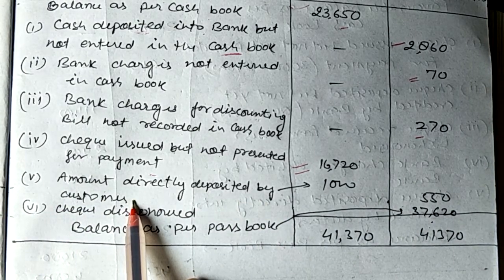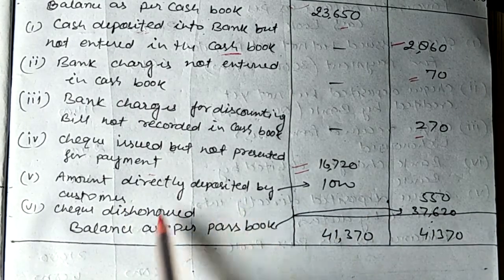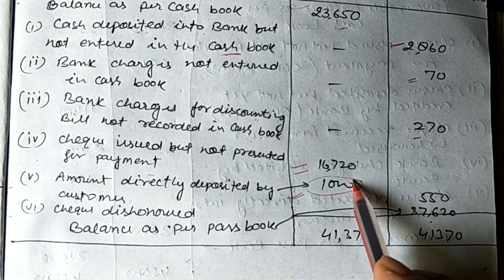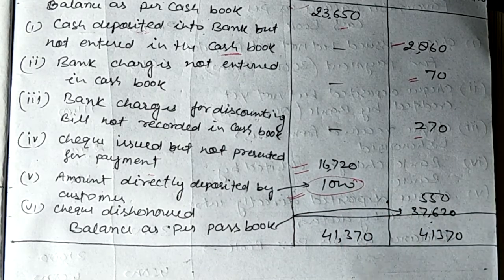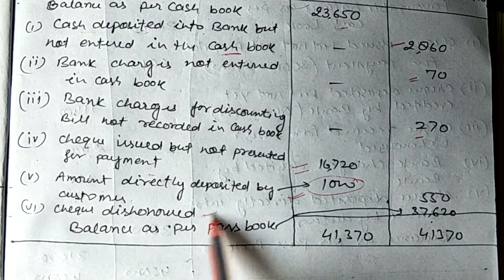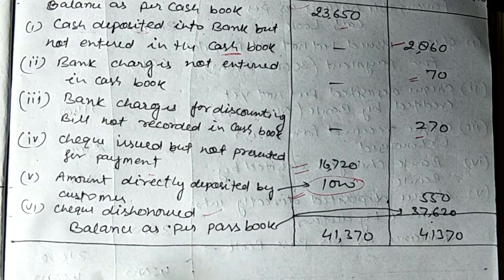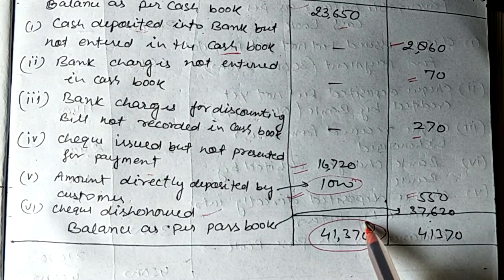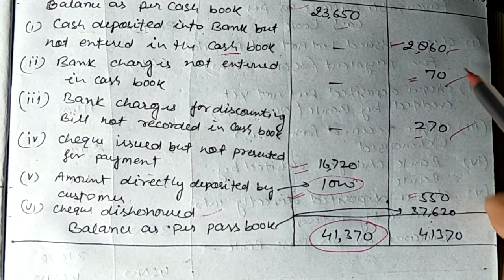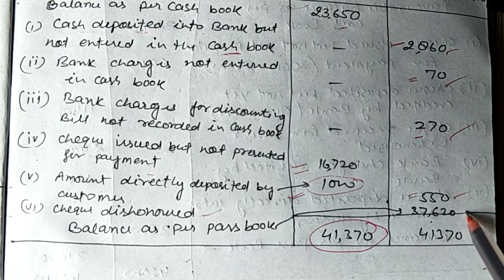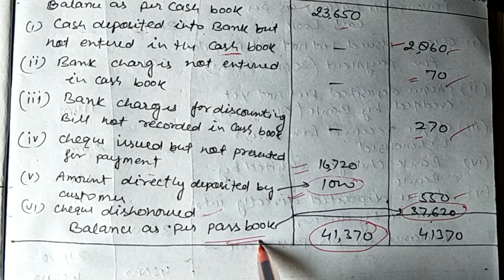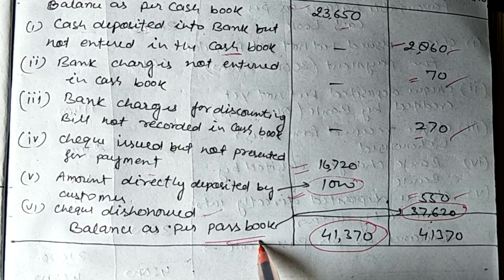A customer has directly deposited 1,000 rupees into our account which we will record in our bank cash book and bring it to the plus side. Now let us total it all. After subtracting the dishonored cheque total from all four items, the difference amount comes to 37,620 rupees, which will be the balance as per passbook. So this was our solution to question number 7.